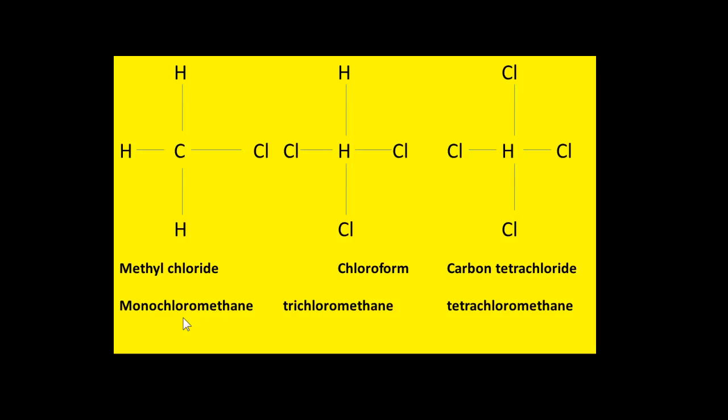Alkanes will react with the halogens so that hydrogen can be replaced. For example, CH4 plus Br2 gives CH3Br plus HBr. That's just replacing one of the hydrogens. Now in here we've shown what happens if you replace more than one. So the simplest one on methane is if you replace only one of the hydrogens you get methyl chloride. If you replace three of them you would get chloroform and if you replace all of the hydrogens then you get carbon tetrachloride. Note they have other names as well. Methyl chloride is monochloromethane, trichloromethane for chloroform, and tetrachloromethane with the four chlorines attached.